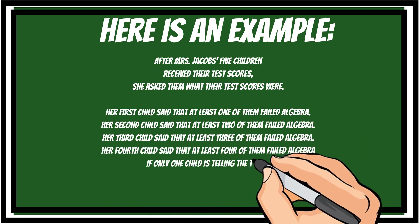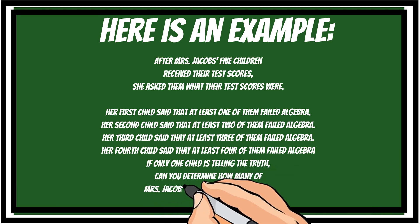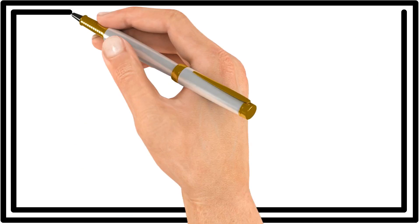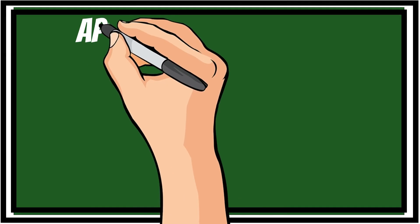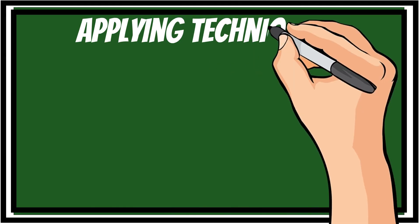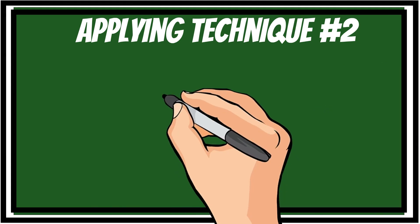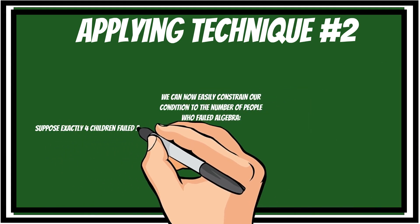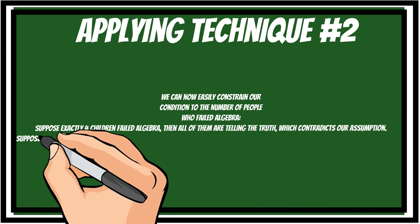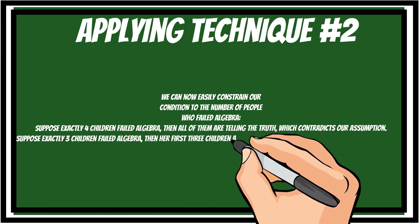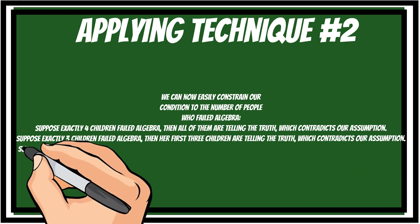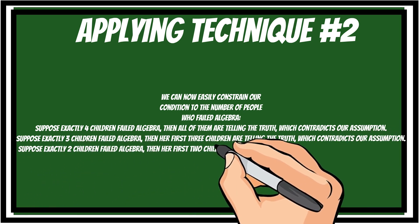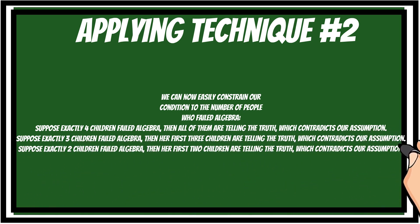If only one child is telling the truth, can you determine how many of Mrs. Jacobs' children are telling the truth? Three or two children fail algebra. In each of these cases, our assumption would be incorrect. Suppose exactly one child failed algebra, then only her first child is telling the truth, which satisfies our assumption.